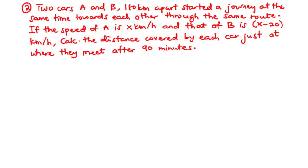Let's solve question 2 of November/December 2021 Mathematics Paper 2. Two cars A and B, 180 kilometers apart, started a journey at the same time towards each other through the same route. If the speed of A is x kilometers per hour and that of B is x minus 20 kilometers per hour, calculate the distance covered by each car just at where they meet after 90 minutes.